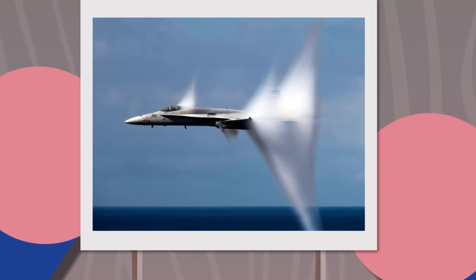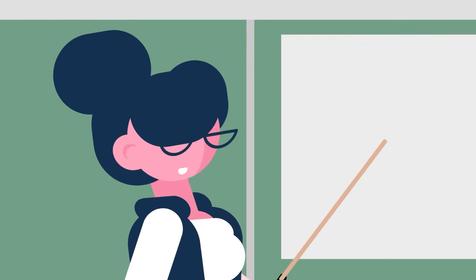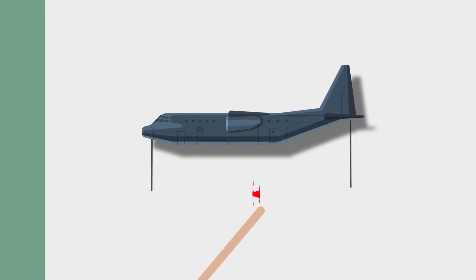The two sonic booms are normally about the same strength. The time between the two is dependent only on how large the aircraft is. The longer and bulkier a plane is, the more time there will be between the two sonic booms.